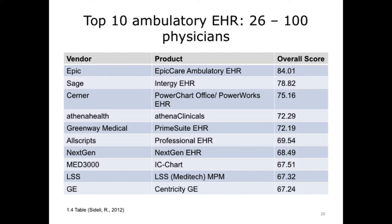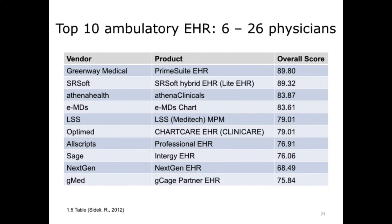In the 26-to-100 physician group, Epic still holds first place, another new vendor comes into second place, and several other new vendors appear on the list. Looking at the 6-to-25 physician group, there are even bigger changes — Epic and others are gone and many other companies are now selling into this sector. There's an overall higher satisfaction in these groups where the top four all score in the 80s, probably reflecting that it is easier to implement systems in smaller businesses than in very large businesses, increasing customer satisfaction.